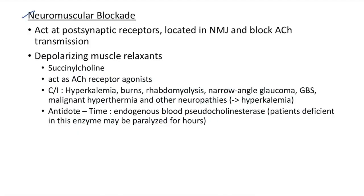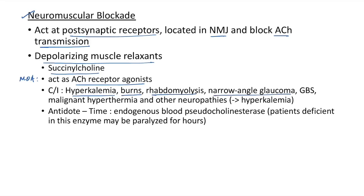Now let us see about neuromuscular blockade. Neuromuscular blockers act at post-synaptic receptors located in the neuromuscular junction and block acetylcholine transmission. There are two types: depolarizing and non-depolarizing muscle relaxants. The example for depolarizing muscle relaxants is succinylcholine. It acts as an acetylcholine receptor agonist and causes paralysis. Contraindications include hyperkalemia, burns, rhabdomyolysis, narrow angle glaucoma, Guillain-Barré syndrome, malignant hyperthermia, and other neuropathies — in these cases it can lead to dangerous hyperkalemia. There is no specific antidote; we have to wait for endogenous plasma pseudocholinesterase to metabolize it. Patients deficient in this enzyme may be paralyzed for hours.